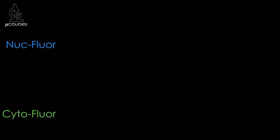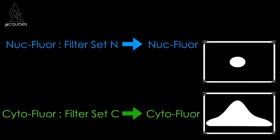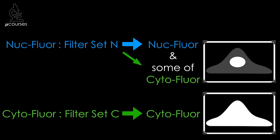We're going to examine bleed-through that occurs in our example specimen, in which fluorescence from cytoflor is collected when acquiring images with filter set N. In this example, all is fine when we image cytoflor with filter set C — the image contains only signal from cytoflor. However, when we image nukeflor with filter set N, we detect not only nukeflor but also bleed-through from cytoflor. If we were to then label these images as nukeflor and cytoflor, we would be wrong.